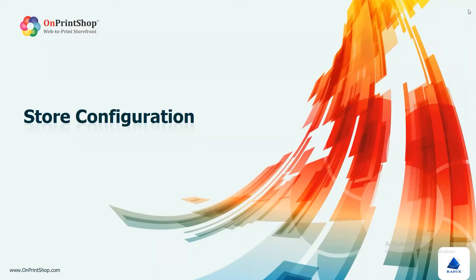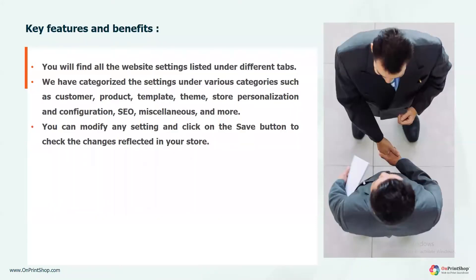Hello, in this video we will learn about store configuration. Let's talk about key features and benefits. You will find all the website settings listed under different tabs. We have categorized the settings under various categories such as customer, product, template, theme, store persuasion, configuration, SEO, miscellaneous, and more. You can modify any setting and click on the save button to check the changes reflected in your store.